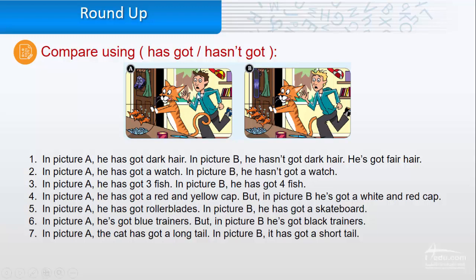In picture A, he has got a watch. In picture B, he hasn't got a watch. Three, in picture A, he has got three fish. In picture B, he has got four fish.